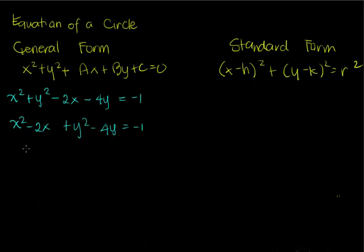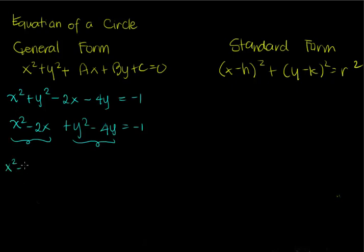After rearranging, we group the x terms together and the y terms together, then we complete the square for each group. To find the third term for completing the square, we take half of the coefficient of the linear term and square it — that is b over 2 raised to the power of 2. For the first group x squared minus 2x, we add negative 2 over 2 squared, which equals 1.